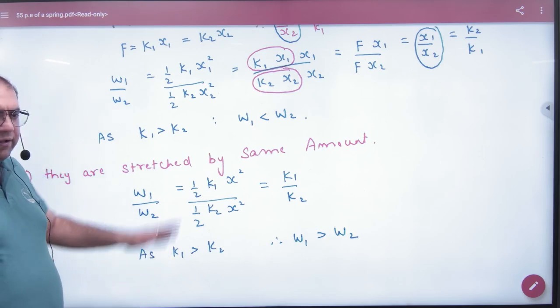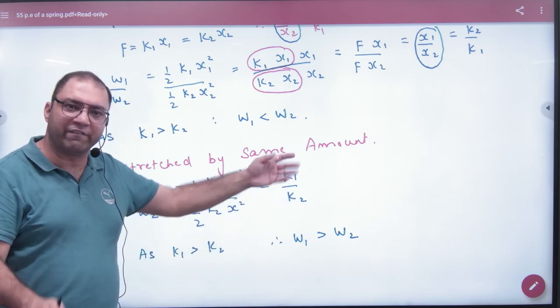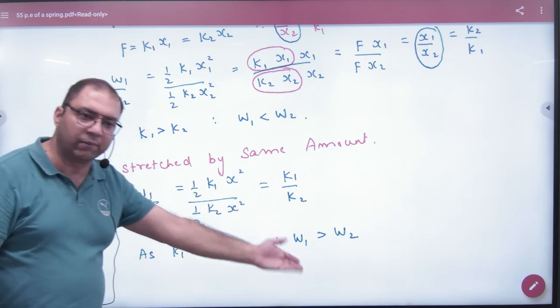It is very easy. Write the formula, X is the same, what is left? K1 by K2. So K1 greater than K2, fraction greater than 1, W1 greater than W2. See you in the next one.